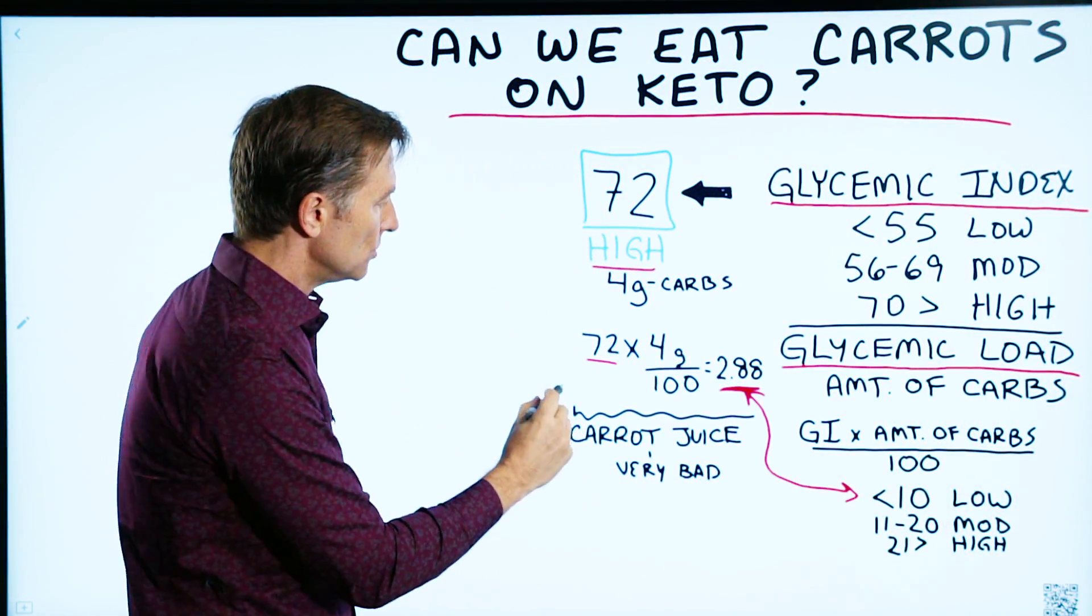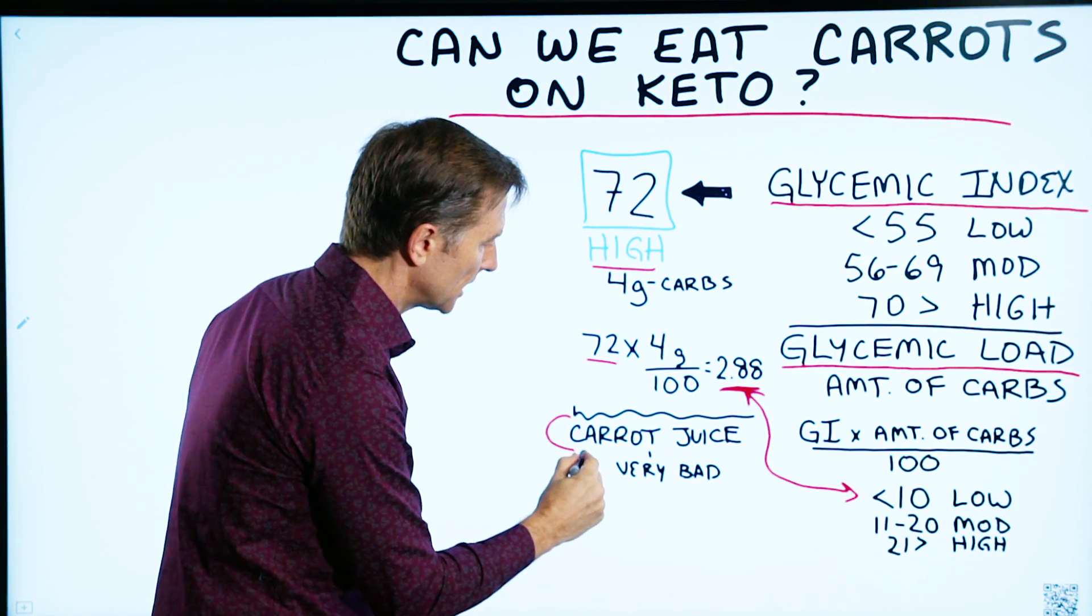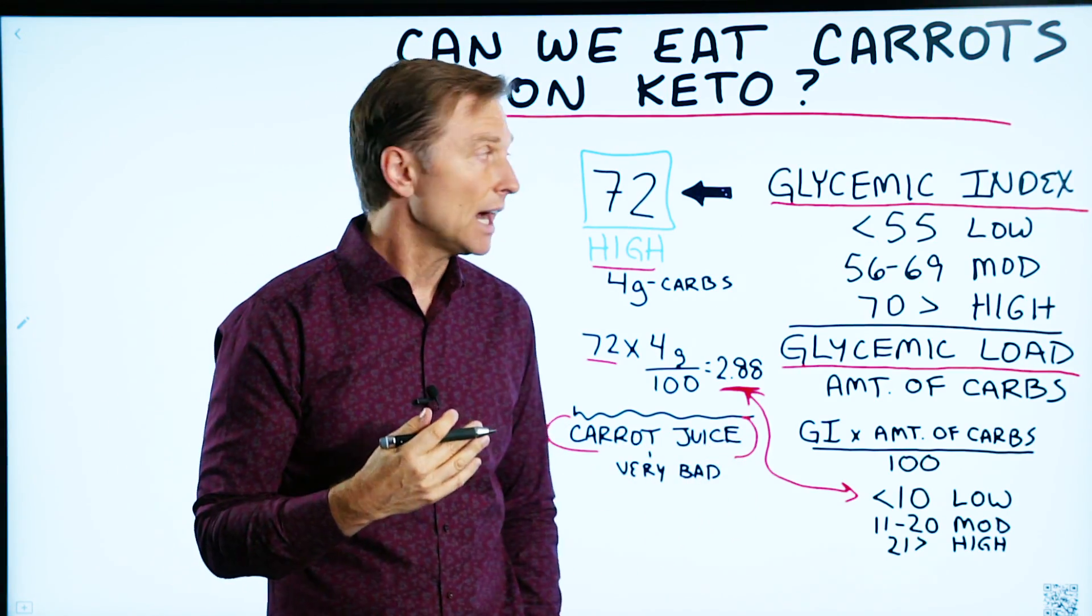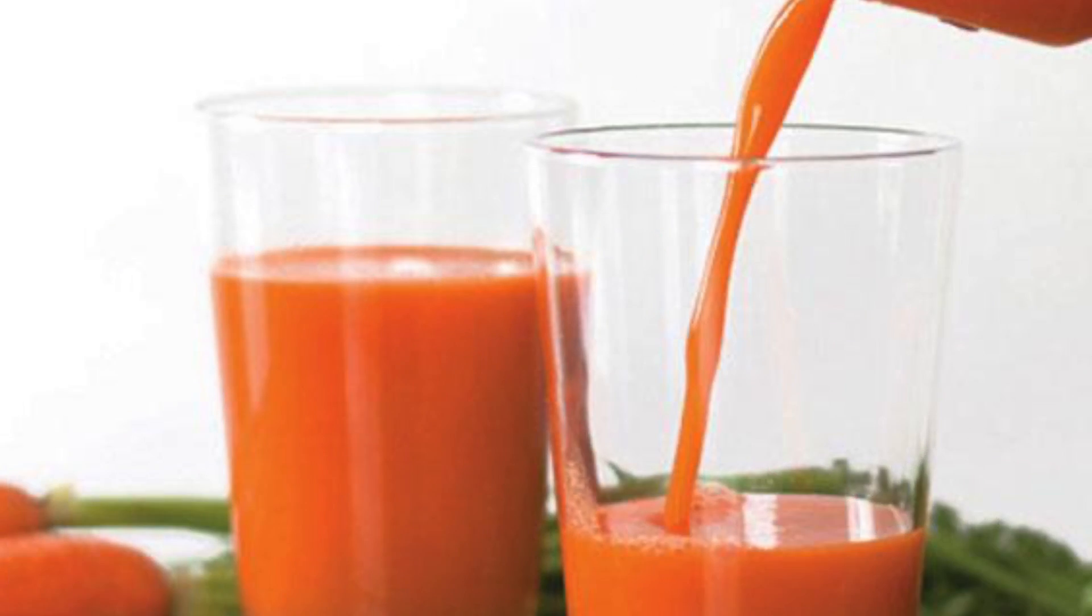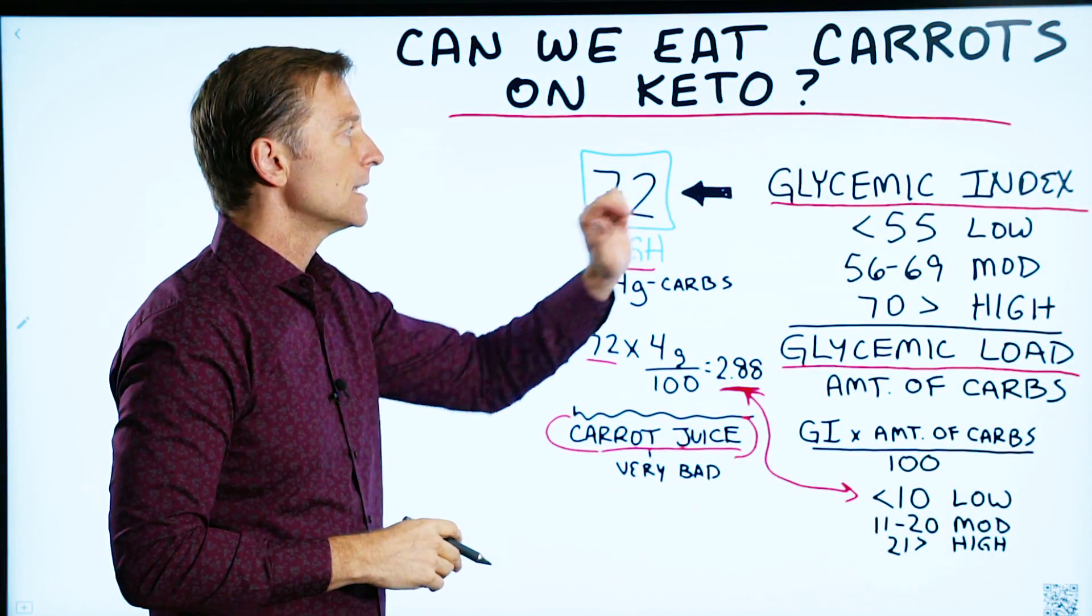However, if you took the carrot juice out of the carrot fiber, that would be very high on the glycemic index because we're dealing with just pure sugar, which creates a huge spike in the glycemic response.